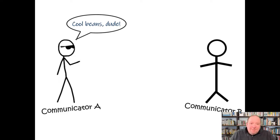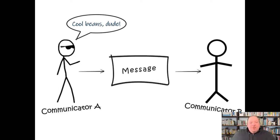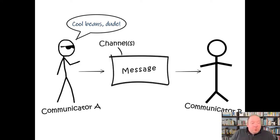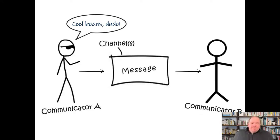Communicator A has something he wants to communicate to communicator B. The content of what that person is trying to communicate, we call the message. The message is what that person is trying to communicate — in this case, 'hey, you're doing something really cool over there,' the cool beans dude. He also has to communicate this somehow, so we have the what of what's being communicated in the message, but the how comes through what we call the channel or channels. The channel could be using your voice, calling on the phone, texting, leaving a post-it note, using smoke signals — whatever method through which the message was sent.